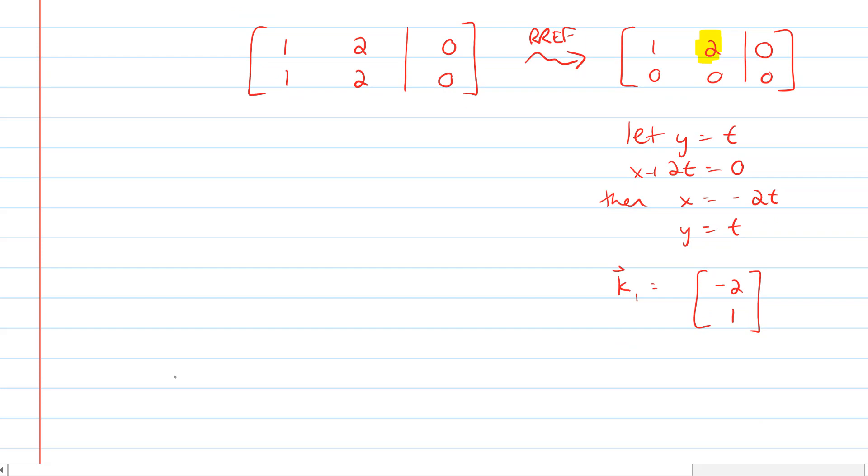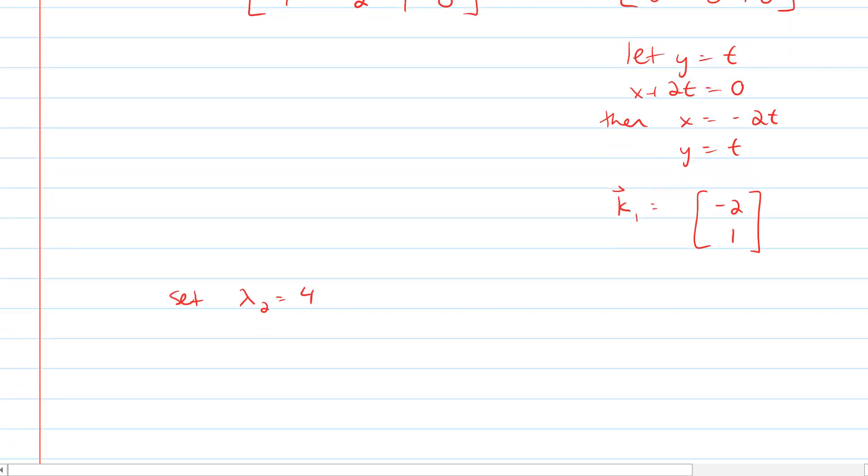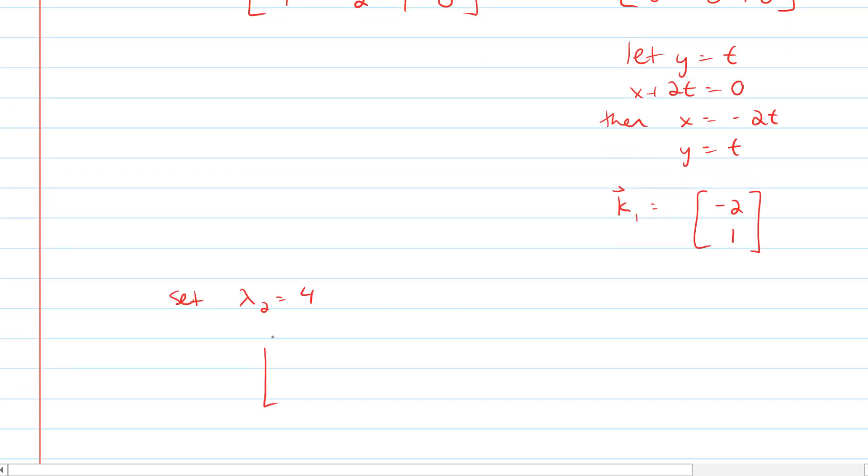Now we have to do the same for the second eigenvalue. Our second value was lambda 2 equals 4, and then when we solve A minus lambda I equals 0, we're going to subtract from the main diagonal. The main diagonal initially was 2 and 3, so when I subtract 4 from the main diagonal, I get negative 2 and negative 1, and the off-diagonal entries stay as they were.